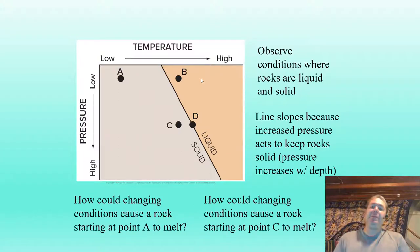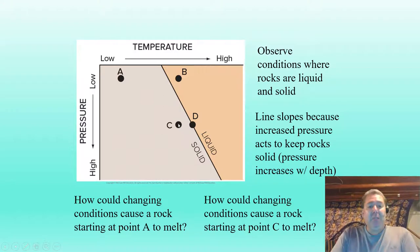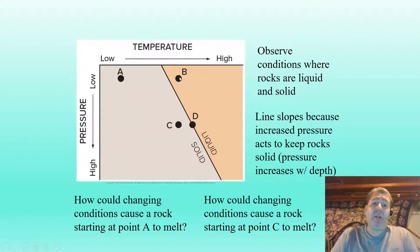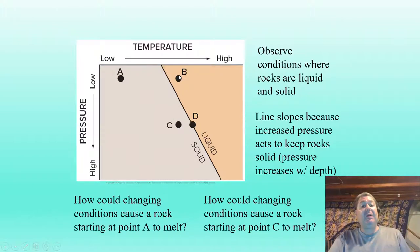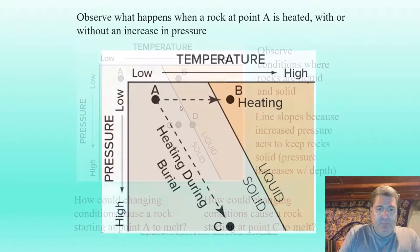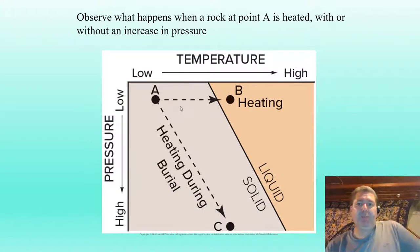Now let's look at point C. What could we do to cause this rock to melt? Just like point A, we could increase the temperature around the rock without burying it or adding pressure, and that would cause it to melt. But there's another thing we can do here: we could reduce the pressure while keeping the temperature the same, and that causes the rock at point C to melt. We can reduce pressure by pulling things apart at divergent margins, which are usually a low-pressure system, or by unburying something.